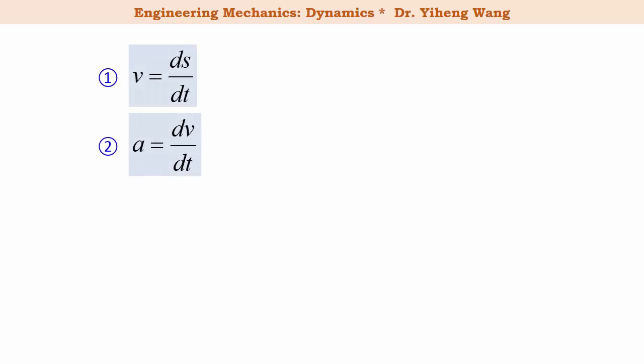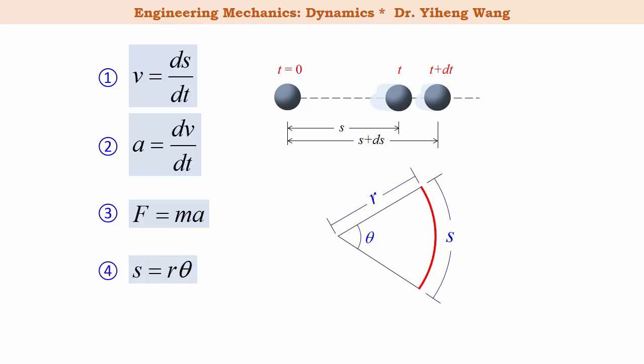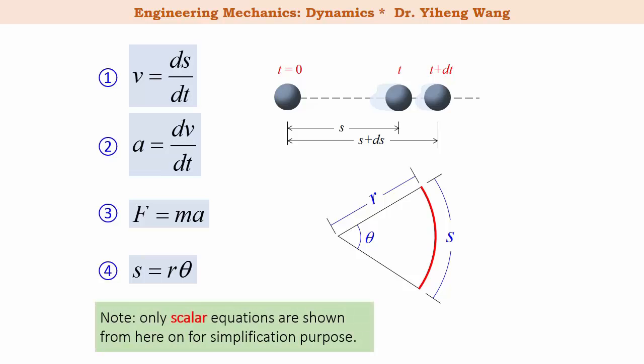The two kinematic equations that relate displacement, velocity, and acceleration to time. Newton's second law. And lastly, the equation that relates the length of an arc to its central angle. Note that again, only scalar equations are shown here and from here on to simplify the demonstration. We will learn the proper vector formulations later.